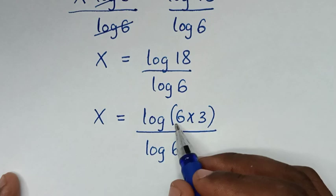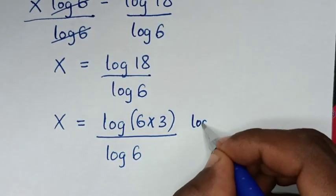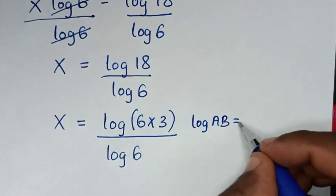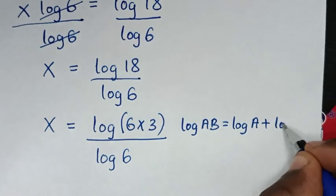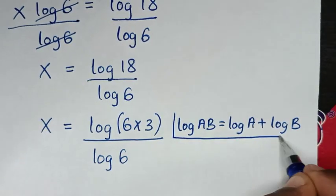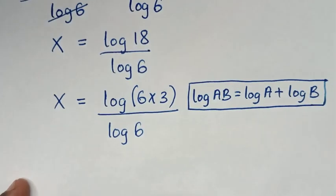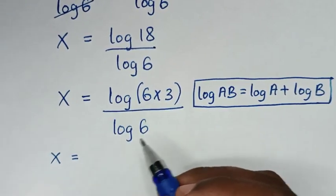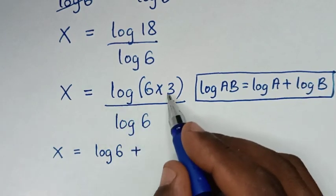Then, from here, log of 6 times 3 is in the form of log of a times b, which is equal to log of a plus log of b. So it will be x is equal to log of 6 plus log of 3, all over log of 6.